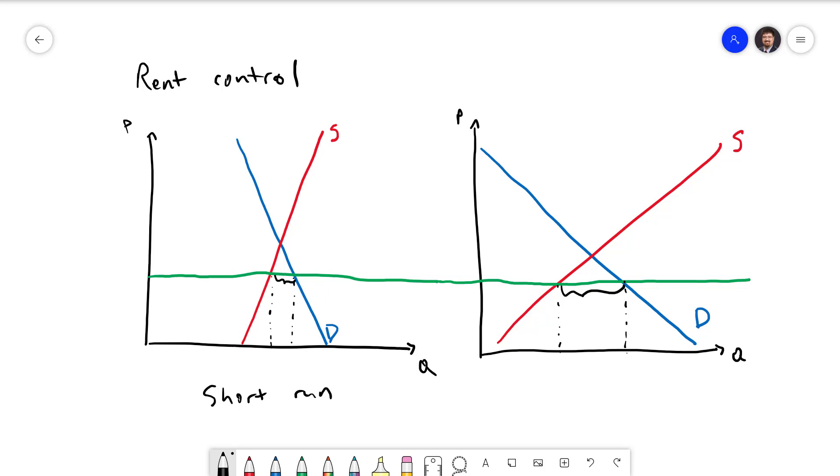Remember that in a competitive market, the price acts as a rationing mechanism. Everyone who's able to buy can buy at that price, and everybody who's willing to sell can also sell at that price. But when the price is not allowed to get to the equilibrium price, it's no longer able to do that. When there's a shortage, the suppliers have to find a way to pick and choose which of the buyers are able to get the apartments. This can lead to a lot of problems.